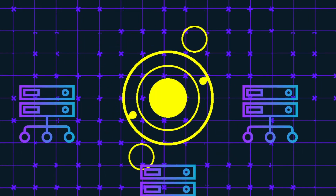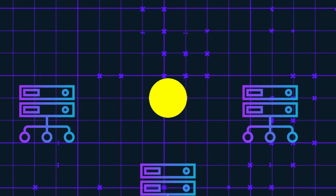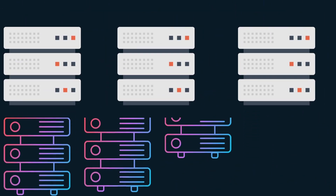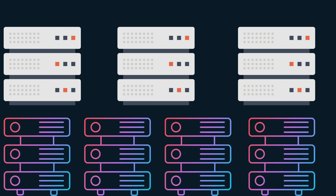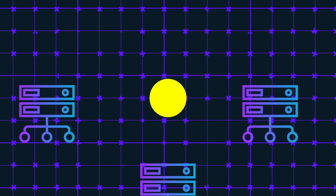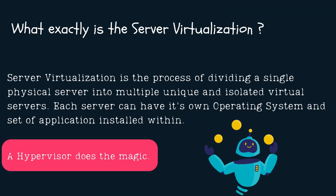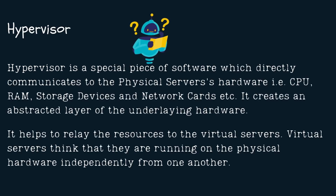Each virtual server acts as if it is running on a physical machine. Because you can run multiple servers on a single powerful physical server, this eliminates the need for dedicated physical servers for each application — a big cut in cost. But what makes it possible? A hypervisor is what does the magic. A hypervisor is a special piece of software that directly communicates with the physical server's hardware. It creates an abstracted layer of the underlying hardware and relays the physical resources to the virtual servers.